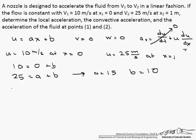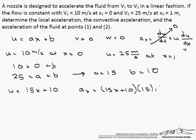We can rewrite our velocity as 15x plus 10 meters per second. So our acceleration equals u times du/dx, which is just 15. And so our acceleration is 225x plus 150 meters per second squared.